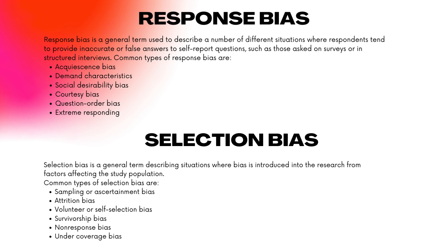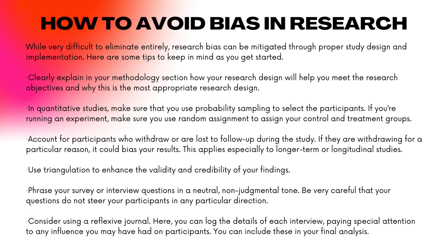Selection Bias is a general term describing situations where bias is introduced into the research from factors affecting the study population. Common types of selection bias are sampling or ascertainment bias, attrition bias, volunteer or self-selection bias, survivorship bias, non-response bias, and under-coverage bias.